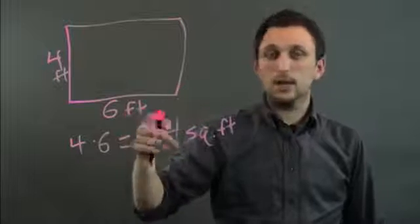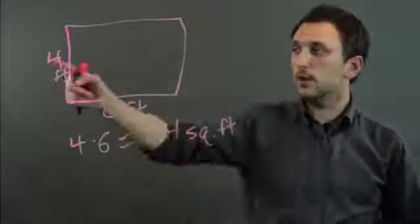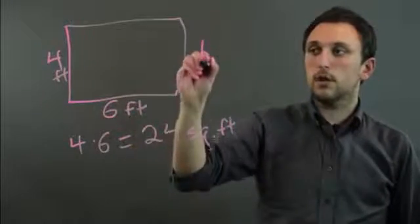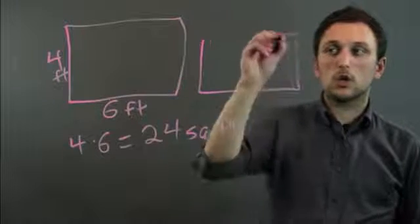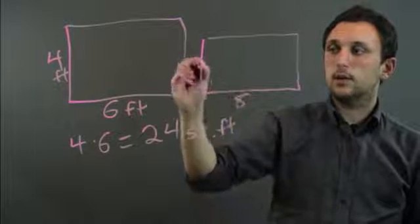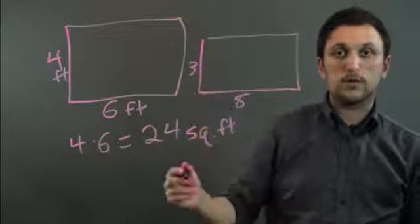And the thing is, with linear feet versus square feet, we have four and six, but we could also have a longer and narrower space, eight and three, and that would still be 24 square feet.